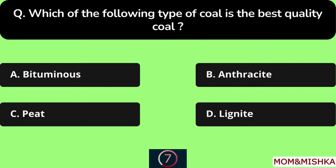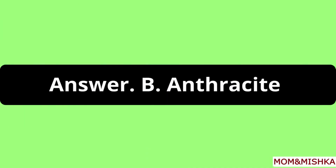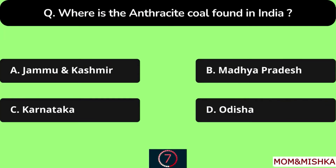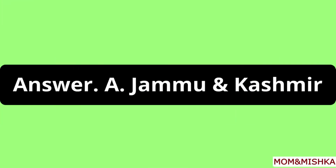Which of the following type of coal is the best quality coal? Anthracite, Option B. Where is anthracite coal found in India? In Jammu and Kashmir, Option A.